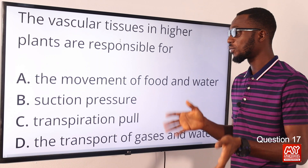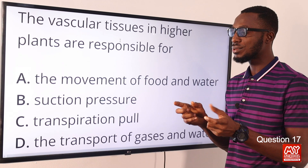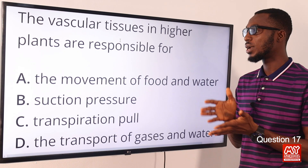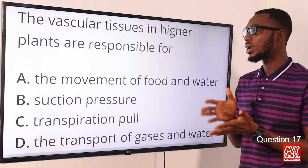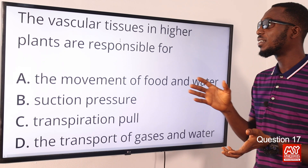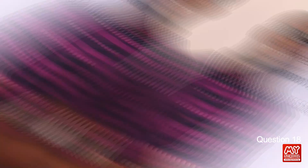The vascular tissues in higher plants are responsible for conducting food and water. When you take a tracheophyte as a case study, you can refer to them as vascular plants because they have these vessels of vascular tissue for conducting food and water. When you look into a vascular stem or root, you will find this vascular bundle. They consist of xylem and phloem. So option A is the correct option.